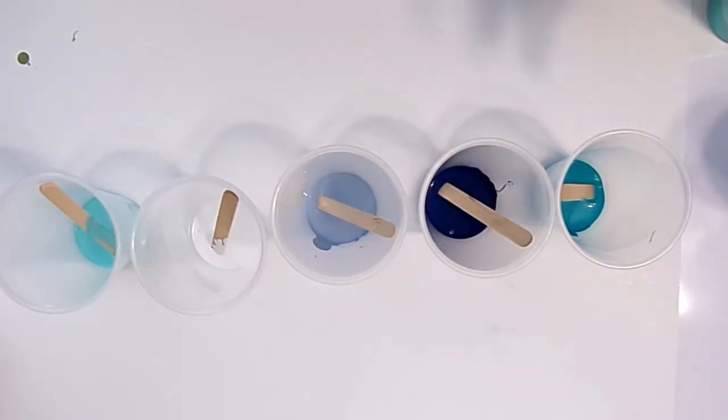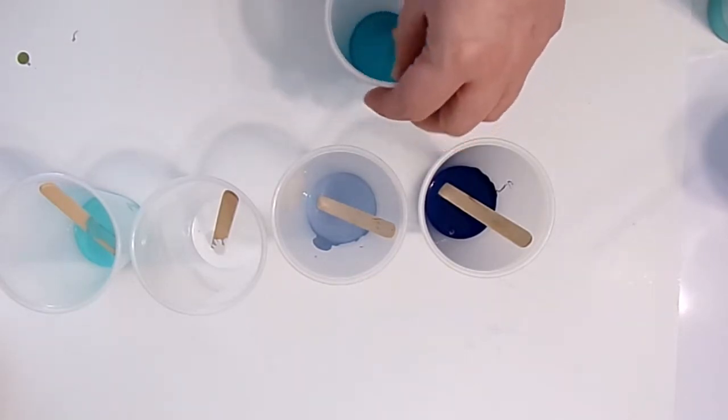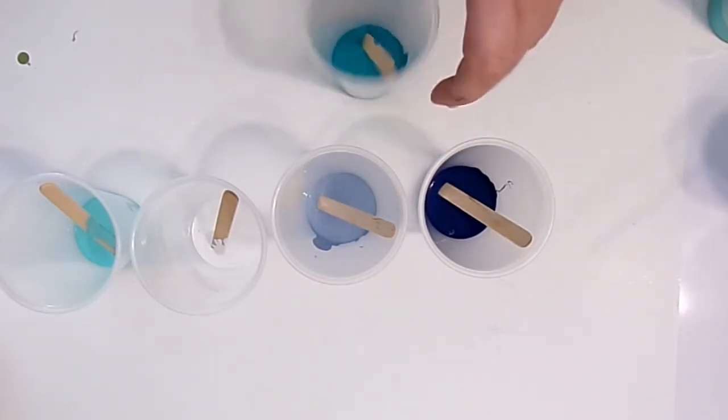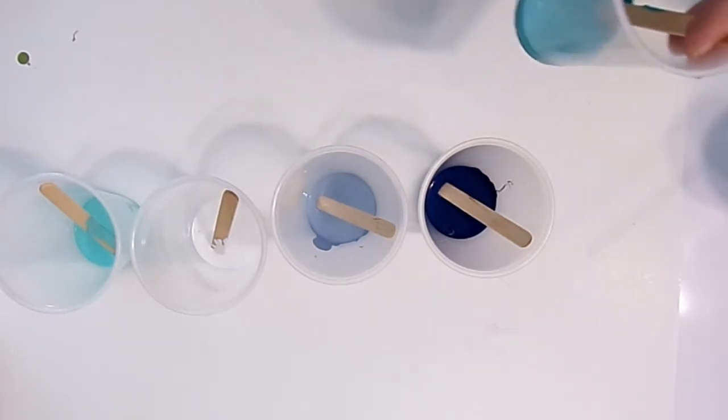Let's just keep it easy. We've got one ounce of paint in all of them. All right, so now we're gonna put about two ounces of Floetrol. So one part paint, two parts Floetrol. So even if you don't have your one ounce, just always remember, keep that ratio: one part paint, two parts Floetrol.